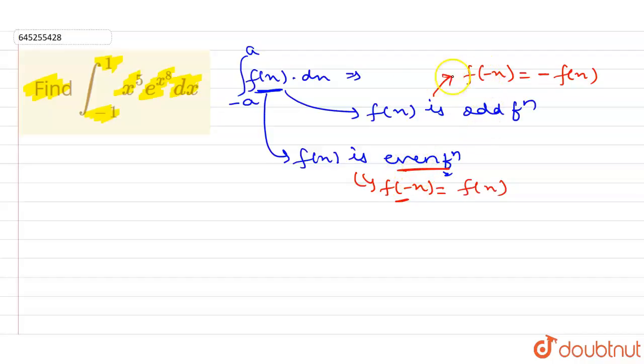So if our f(x) is odd function, then this integral is 0 without solving it. And if it is even function, I can write it as 2 integral from 0 to a, f of x dx.